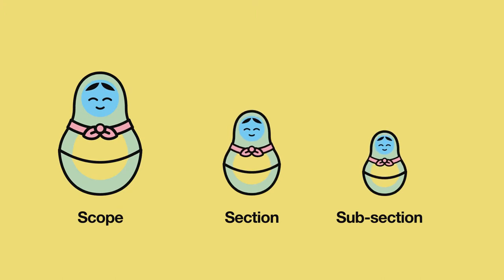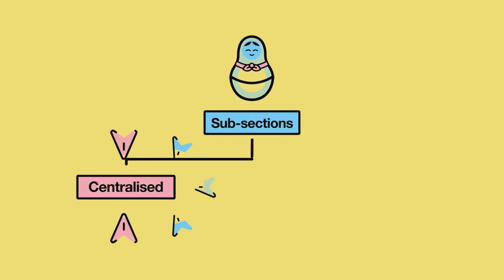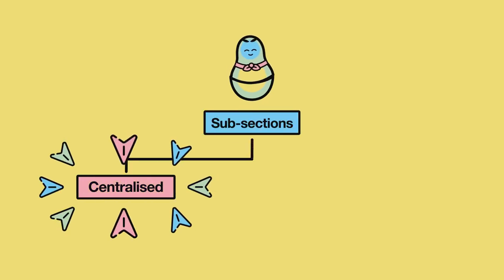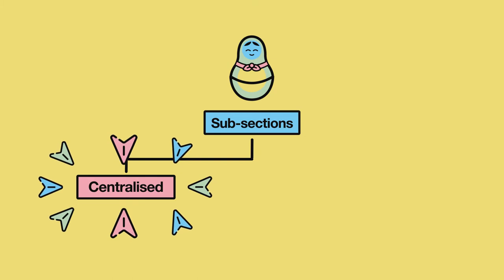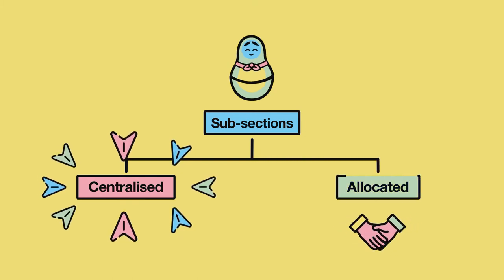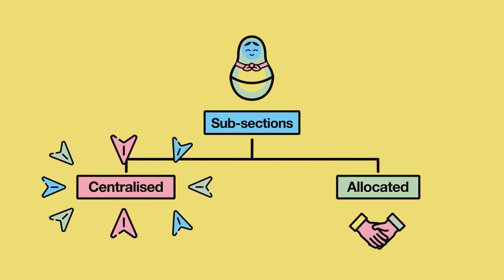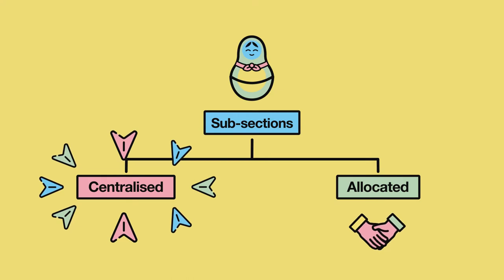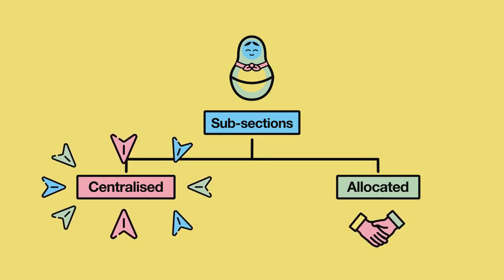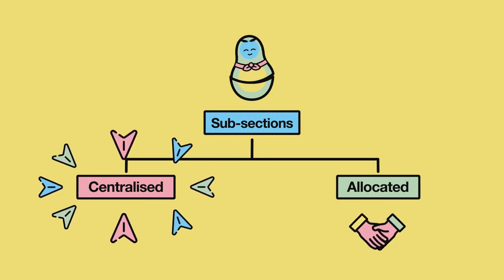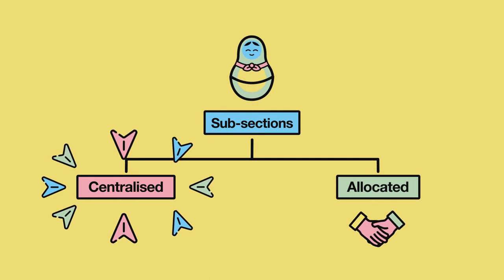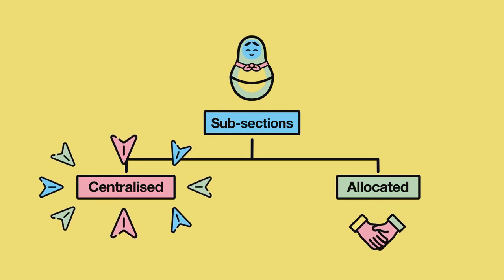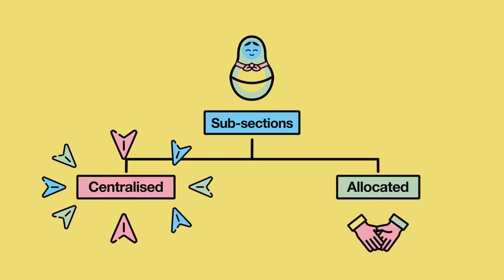The subsections are divided into two types. Centralised – which contain information that one management and directorate of services department is responsible for. Allocated – which contain information that different management and directorate of services departments are responsible for, but with only one department in charge of establishing maintenance and updating criteria.